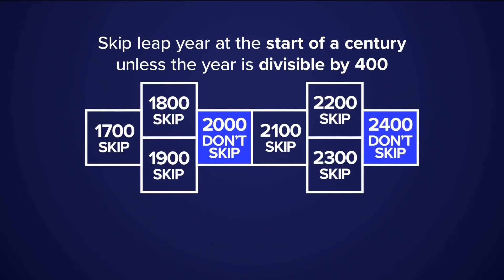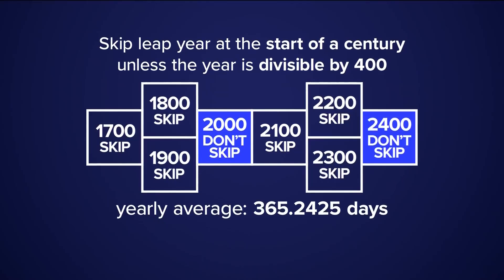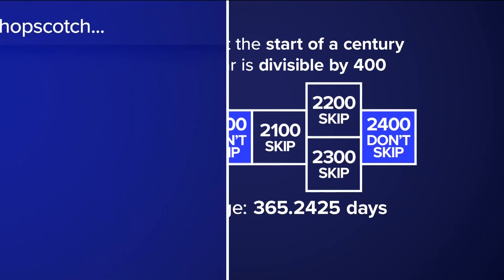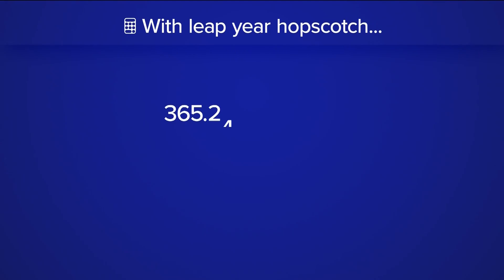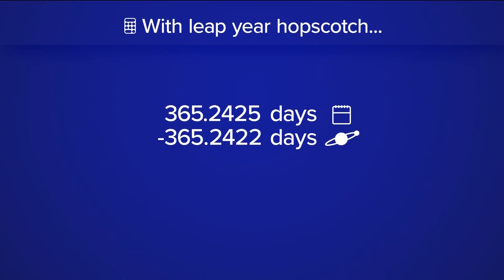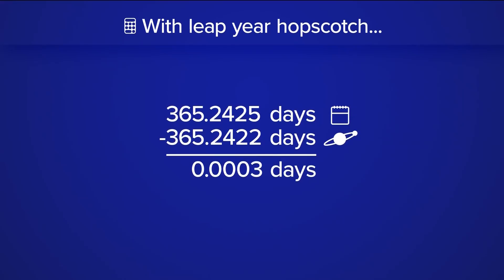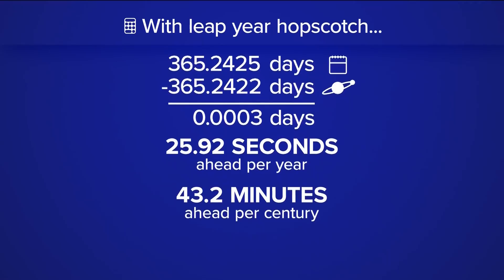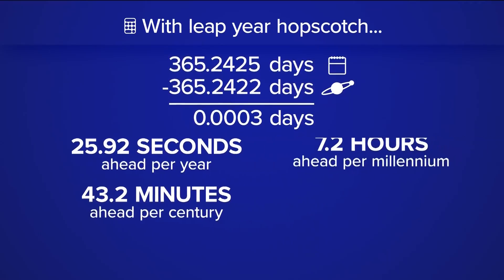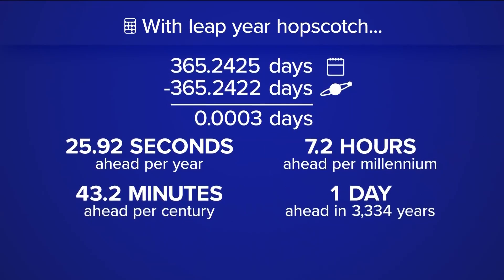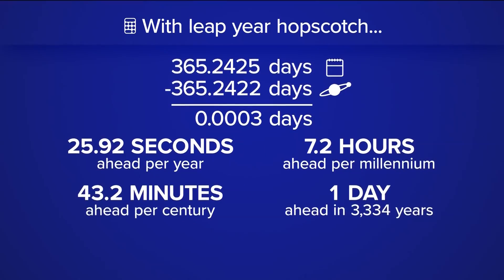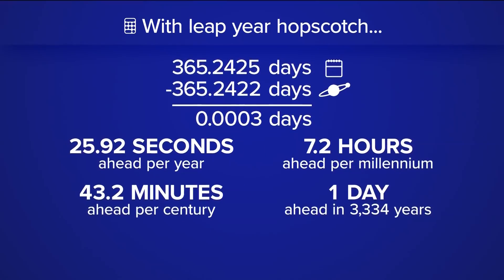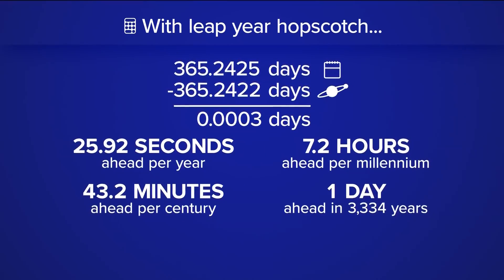With this added solution, the current average is 365.2425 days, which is a lot closer to the exact solar year. But unfortunately, we're still off by decimals — about 26 seconds ahead each year. At this rate, it would take over 3,000 years to be off by one day, which some would say is close enough.